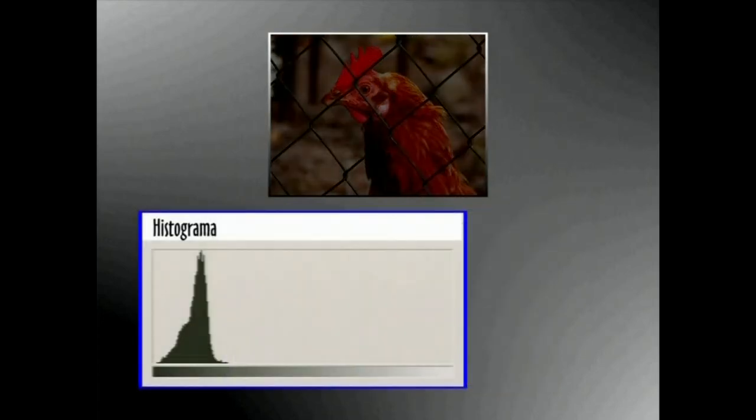Histograma ezker aldean agertzen bada, beltzaren aldean, argazkia esposizio denbora laburregi egin dela esan nahi du. Horregatik atera da ilun.